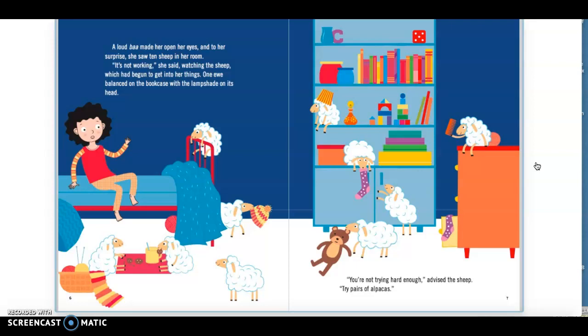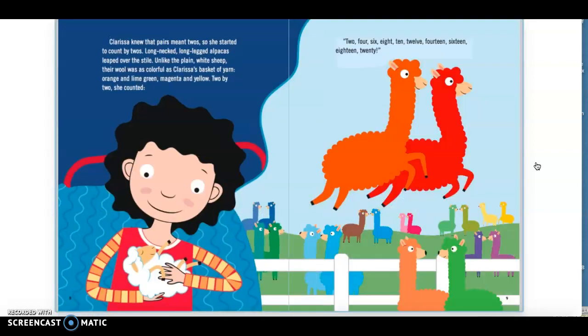Try pears of alpacas. Clarissa knew that pears meant two, so she started to count by twos. Long-necked, long-legged alpacas leaped over the stile. Unlike the plain white sheep, their wool was as colorful as Clarissa's basket of yarn. Orange and lime green, magenta and yellow, two by two she counted.